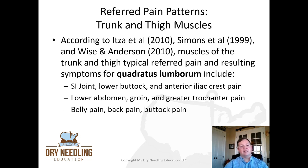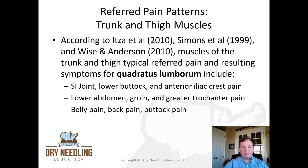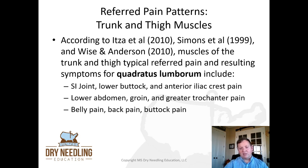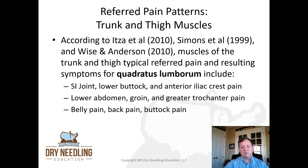For the quadratus lumborum: SI joint, lower buttock and anterior iliac crest, lower abdomen, groin, and greater trochanter pain, as well as belly pain, back pain, and buttock pain. I'm also a little finicky about quadratus lumborum — I don't teach needling it unless we're doing it with real-time ultrasound, which we cover in our ultrasound-guided dry needling course. The kidney is a significant concern; it's located retroperitoneally deep to the QL, from T11 to L3. You can't ascertain appropriate depth and avoid the kidney unless you visualize it with ultrasound. I don't think the QL is a safe muscle to needle without real-time ultrasound, although it's an important muscle often implicated in these pain referrals.